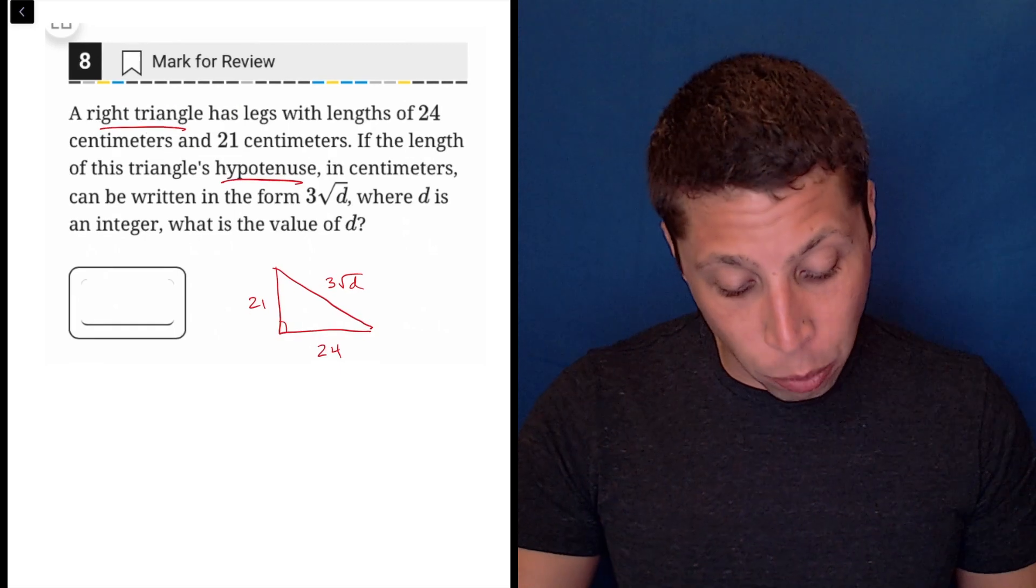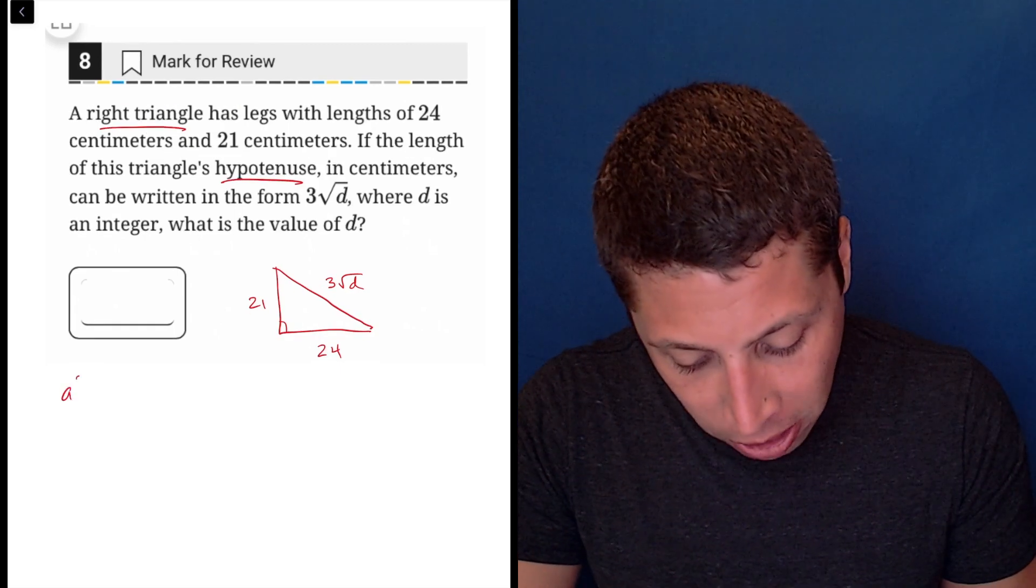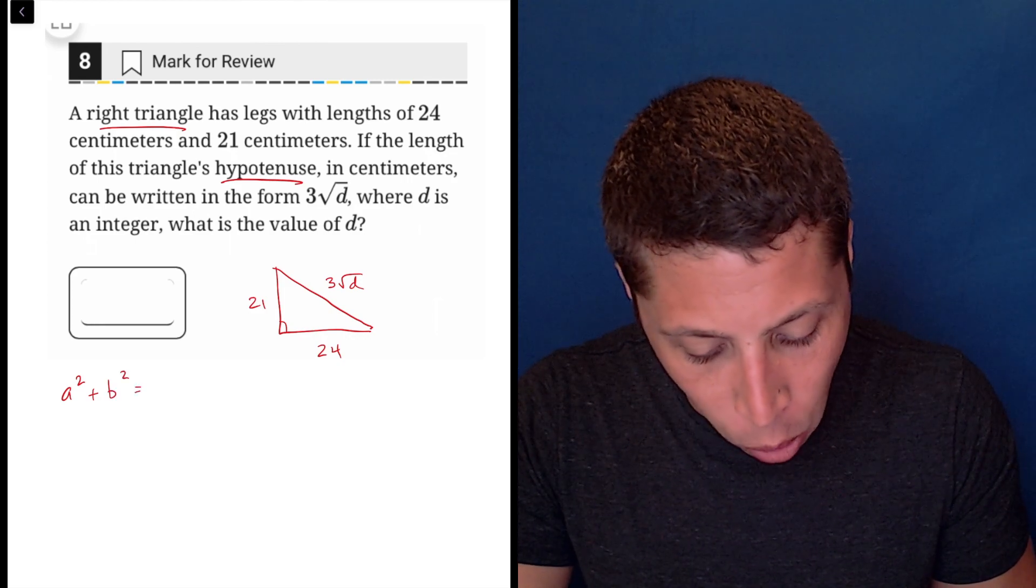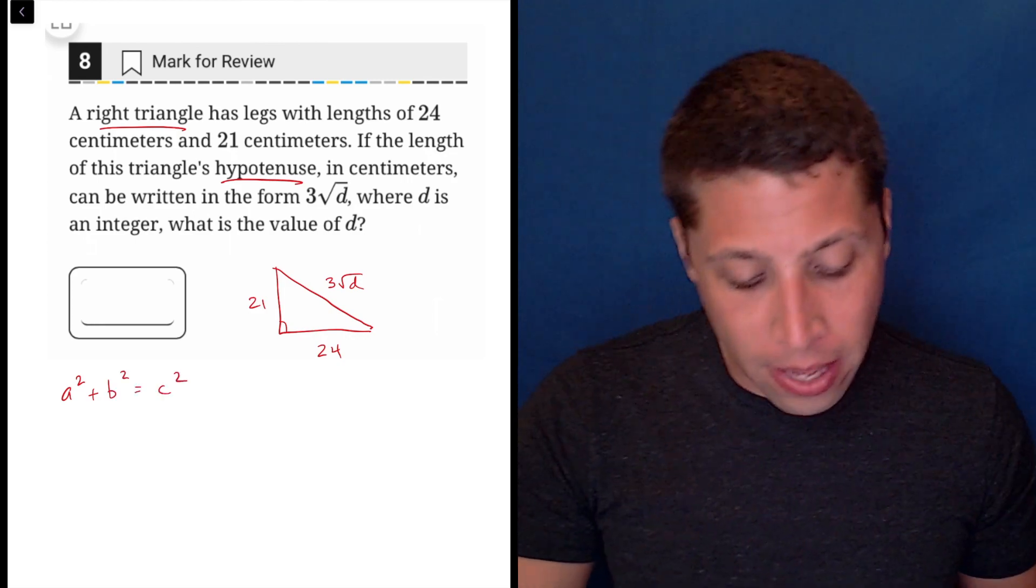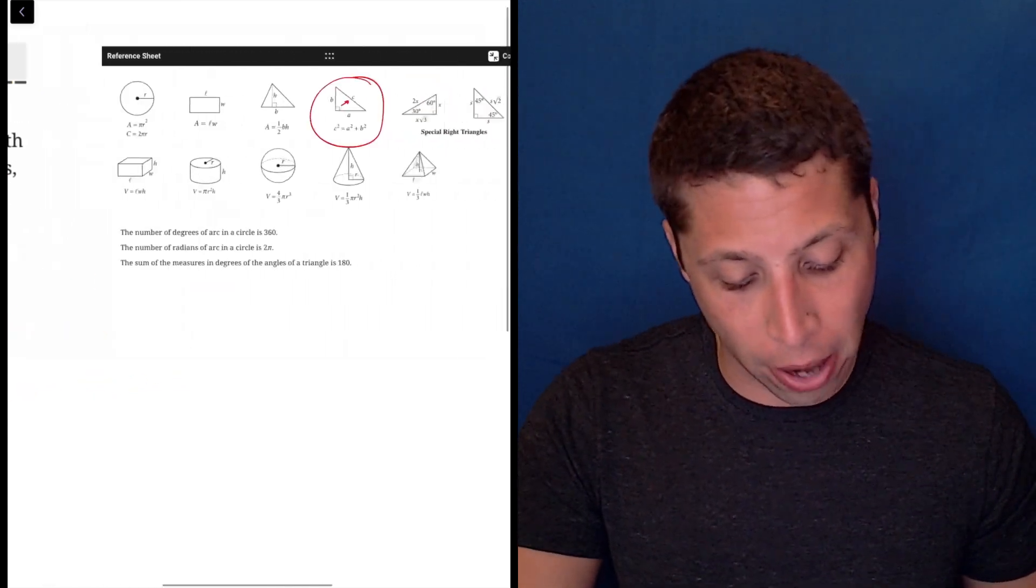So we're going to use A squared plus B squared equals C squared, but the C will be a little annoying. We just need to make sure that that part always goes in that space. The 21 and the 24 are both legs. We can put them in A or B. It doesn't really matter. The order doesn't matter there.